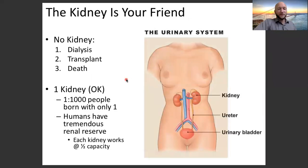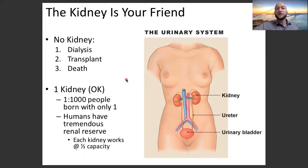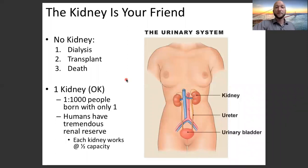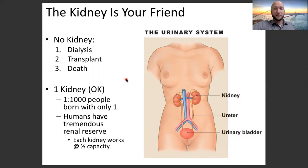As we started talking about the very first class this semester, form and function are closely related. To understand function you have to understand form, which is why anatomy is a prerequisite for this class. But let's look at a bit of the anatomy of our renal system — kidneys. Kidneys are the main thing we're talking about when we talk about the renal system.